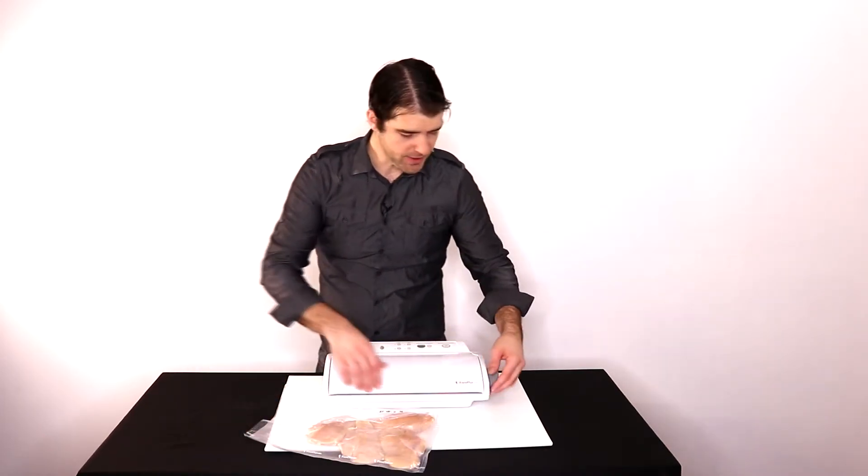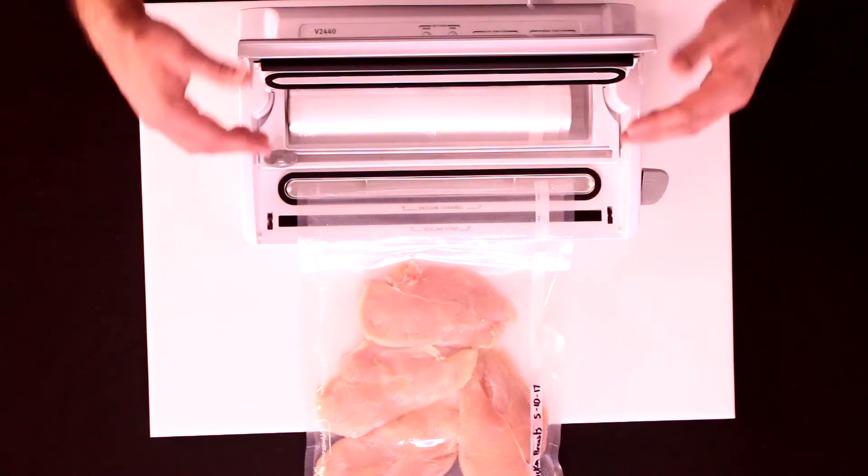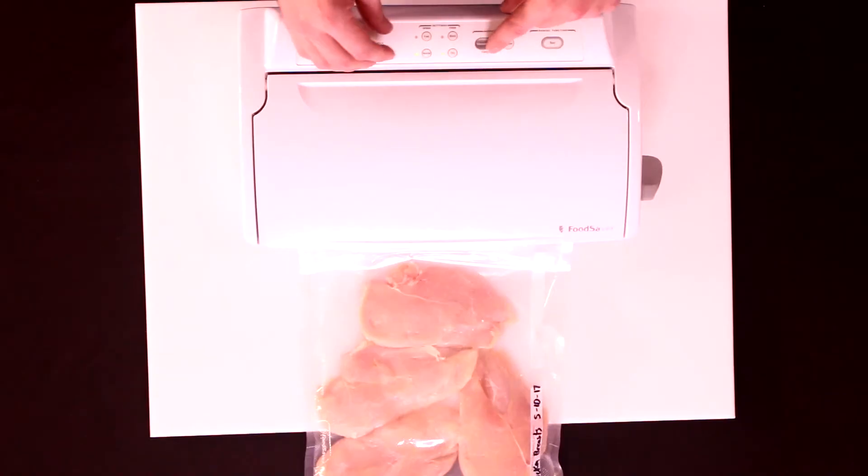Then all you have to do is fold the edges of the bag back out. Put the opening of the bag into the trough of your vacuum packaging system. Close the lid. Secure it. Make the appropriate settings for what you're vacuum packaging, and hit start.